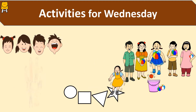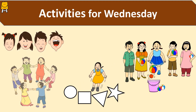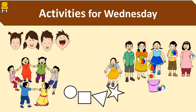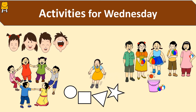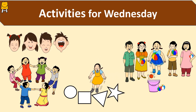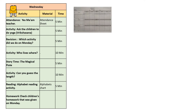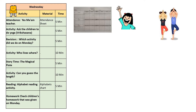Activities for Wednesday. Attendance: instruct the children to stand at their place when their name is called out and say 'Yes ma'am, teacher.' Yoga: ask the children to do yoga — Vrukshasana. Revision: ask the children to discuss the activities that were done on Monday.